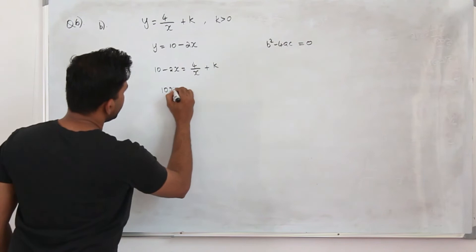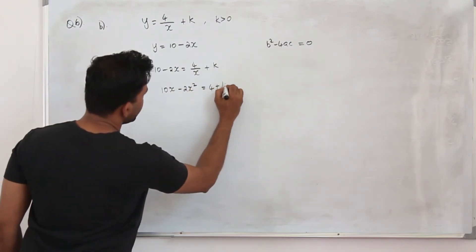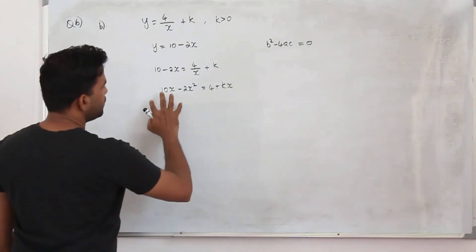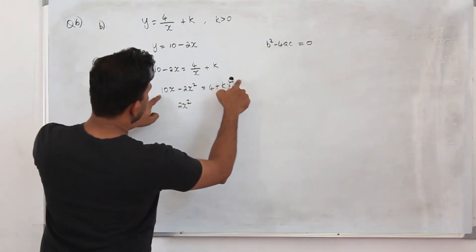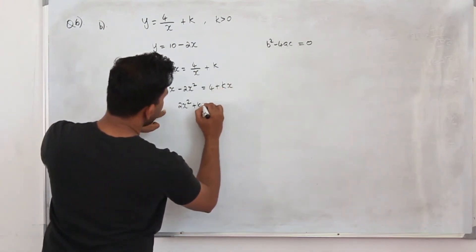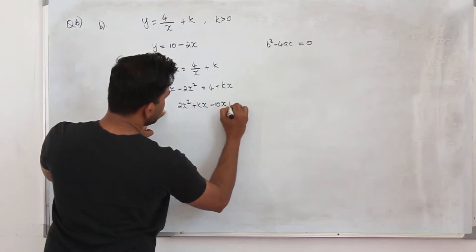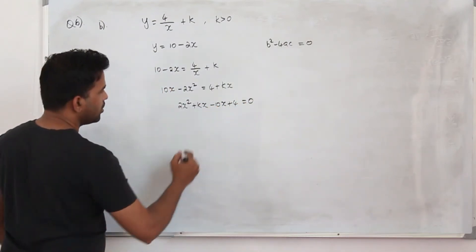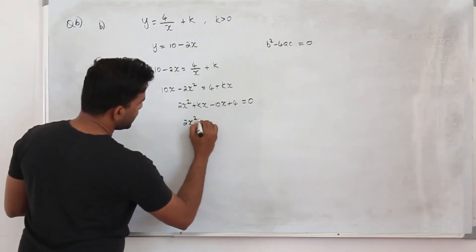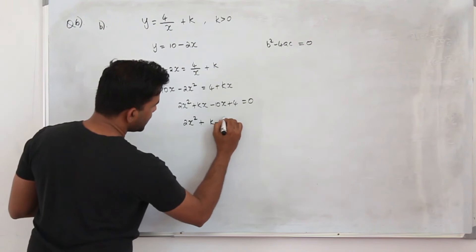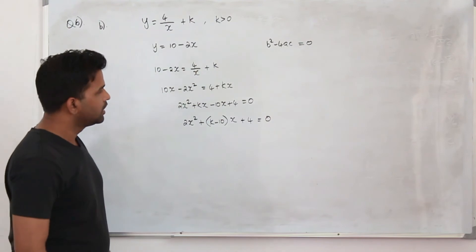Equate them. 10 minus 2x equals 4 upon x plus k. And form a quadratic function. Multiply everything by x. 10x minus 2x square equals 4 plus kx. Put everything to one side of the equation. You will have 2x square plus kx. 10x goes here, it becomes minus 10x plus 4 is 0. Or take x as a common factor. 2x square plus k minus 10 into x plus 4 is 0.